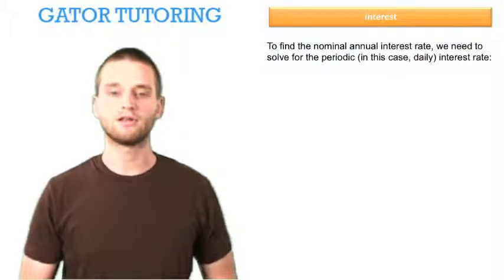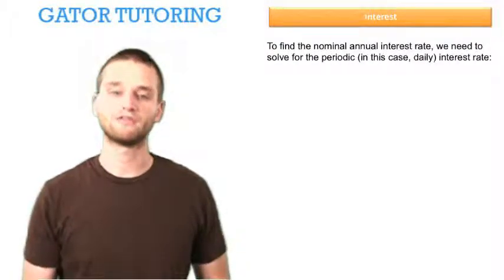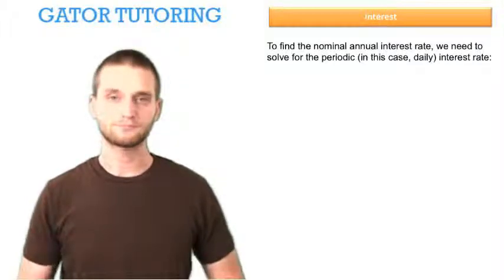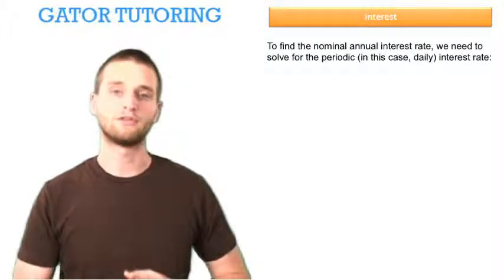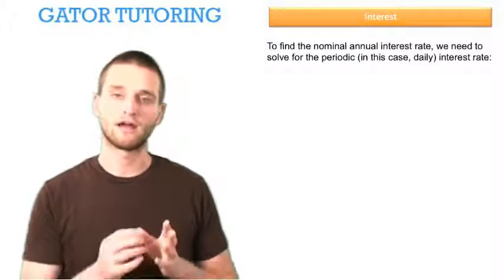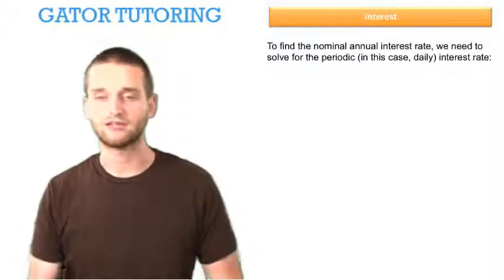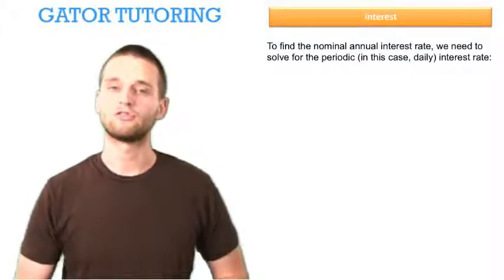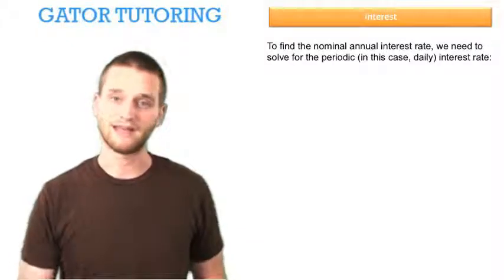To find the nominal annual interest rate, we need to solve for the periodic, in this case, daily interest rate. So we have to first solve down to the period at which the interest is being compounded. In this case, interest is compounded every day. So first, we need to find what that interest rate is on the day.